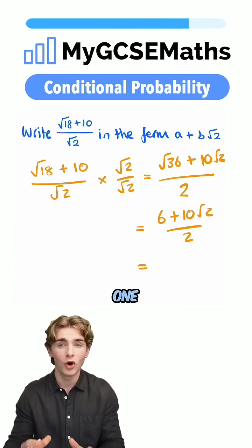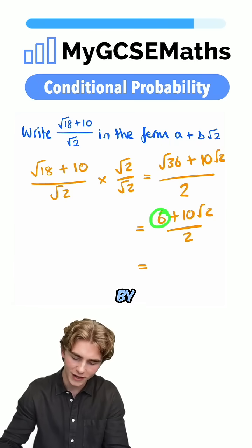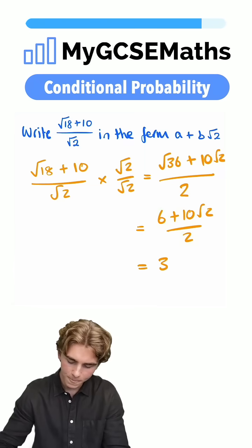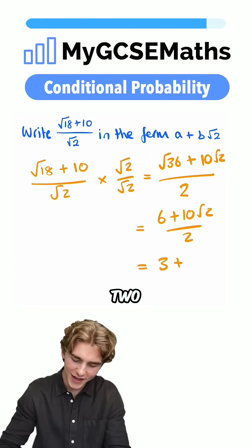Now, we can simplify one more time, we can do 6 divided by 2, which is going to be 3, and then we can do 10 root 2 divided by 2, that's going to give us 5 root 2.